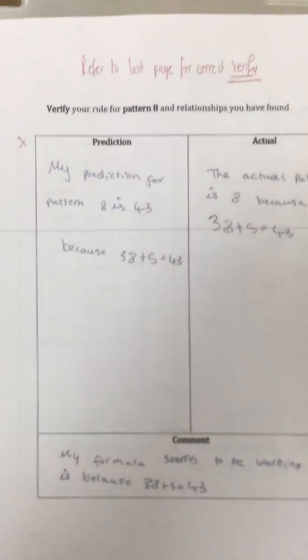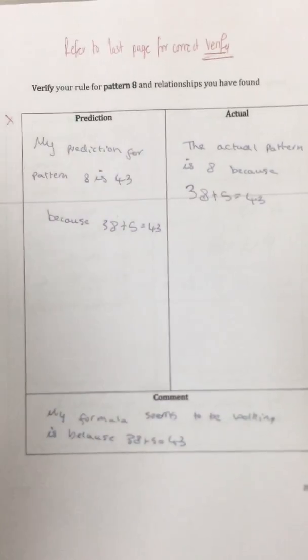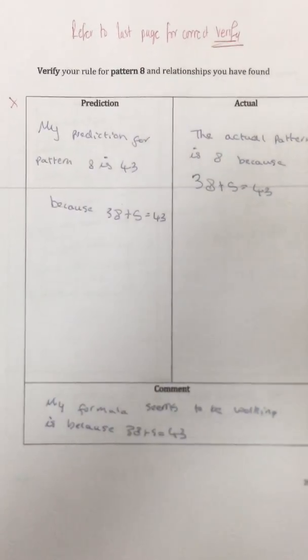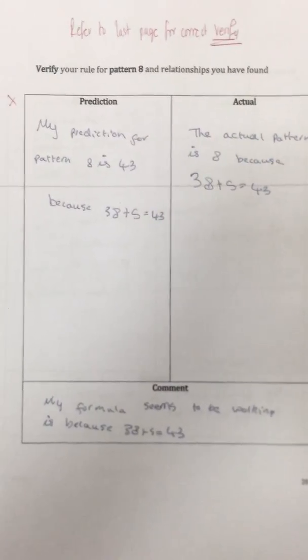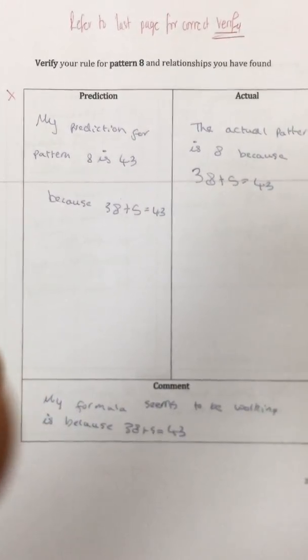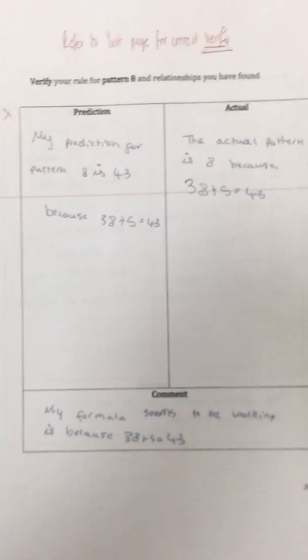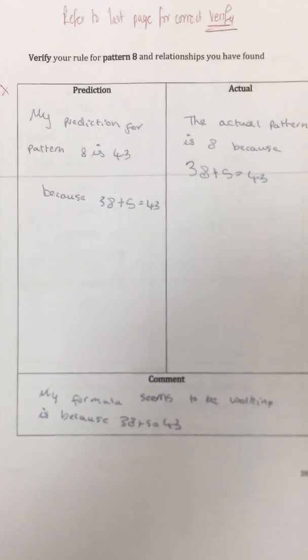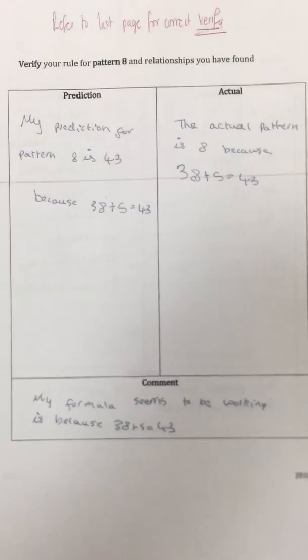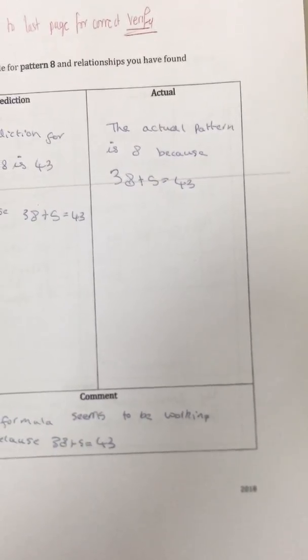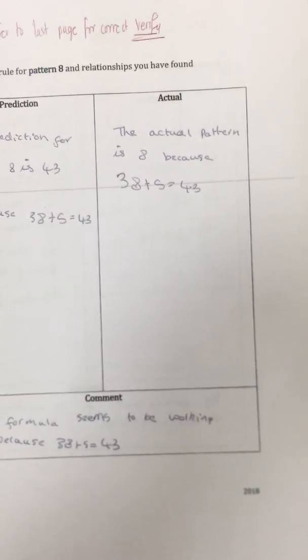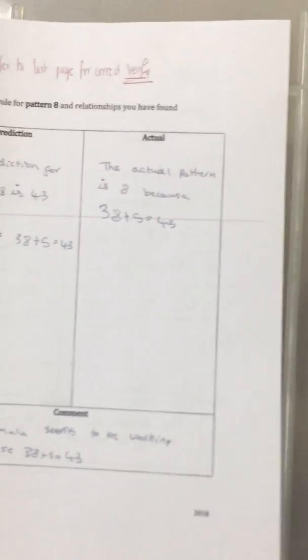To verify for pattern 8, repeat the same process: use the formula, 5×8=40, plus 3 is 43. This student again just added up 5s, which is not what we're looking for. For the actual, draw 8 flower beds, count all white squares, and get the answer.